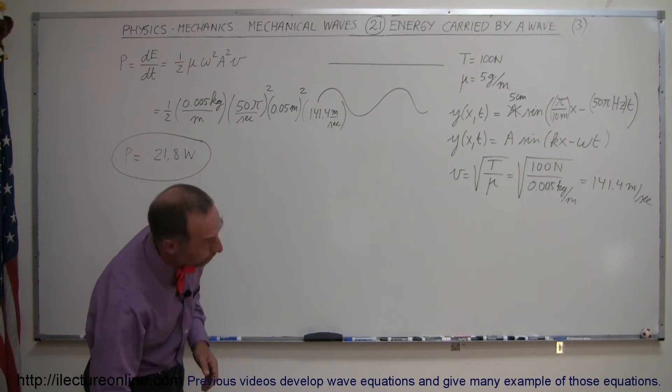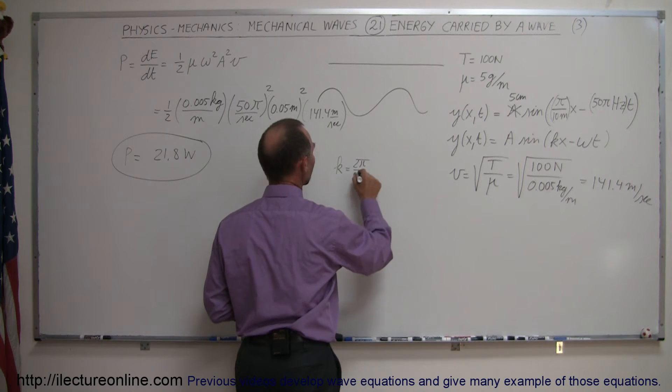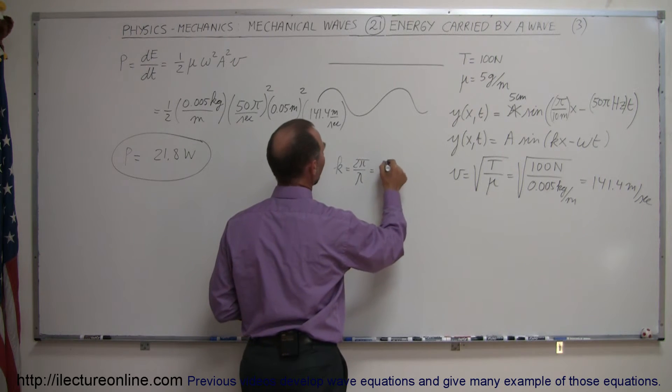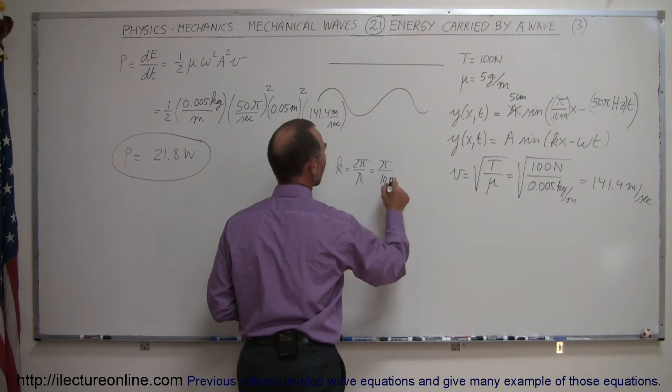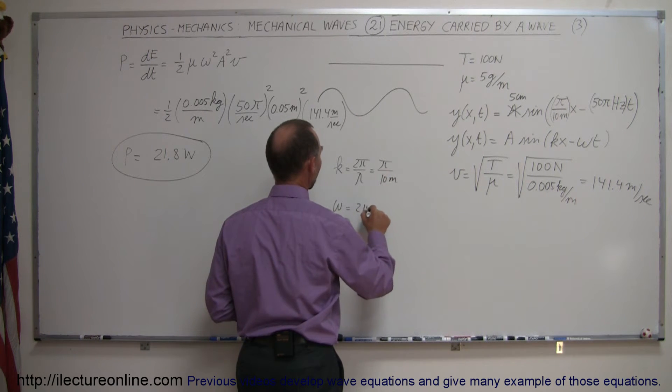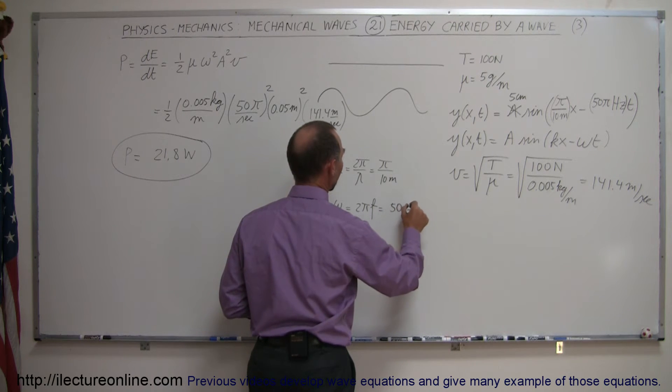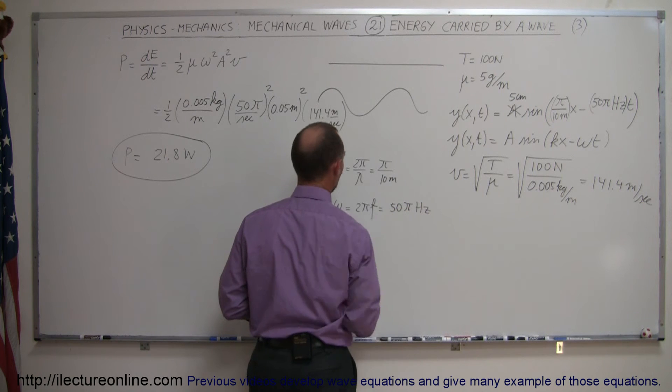Notice we were given the k, and we're given the omega. So, k, which is equal to 2 pi over lambda, is equal to pi divided by 10 meters. And then we had omega, which is equal to 2 pi f, which is equal to 50 pi hertz.